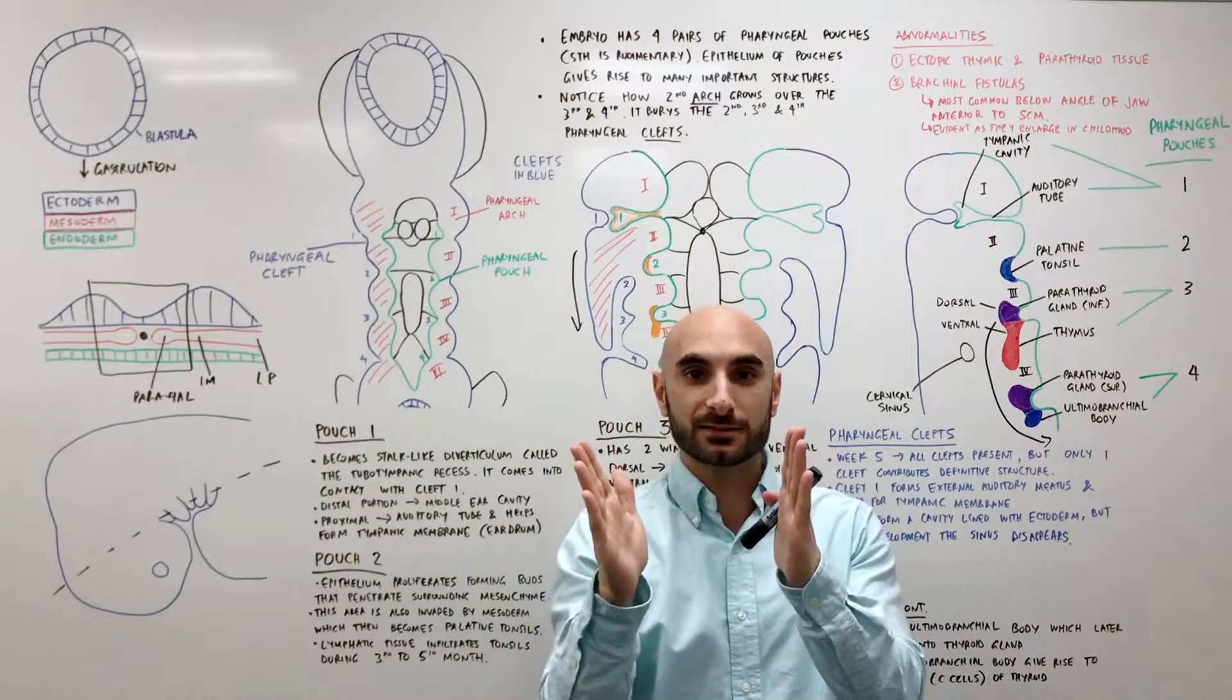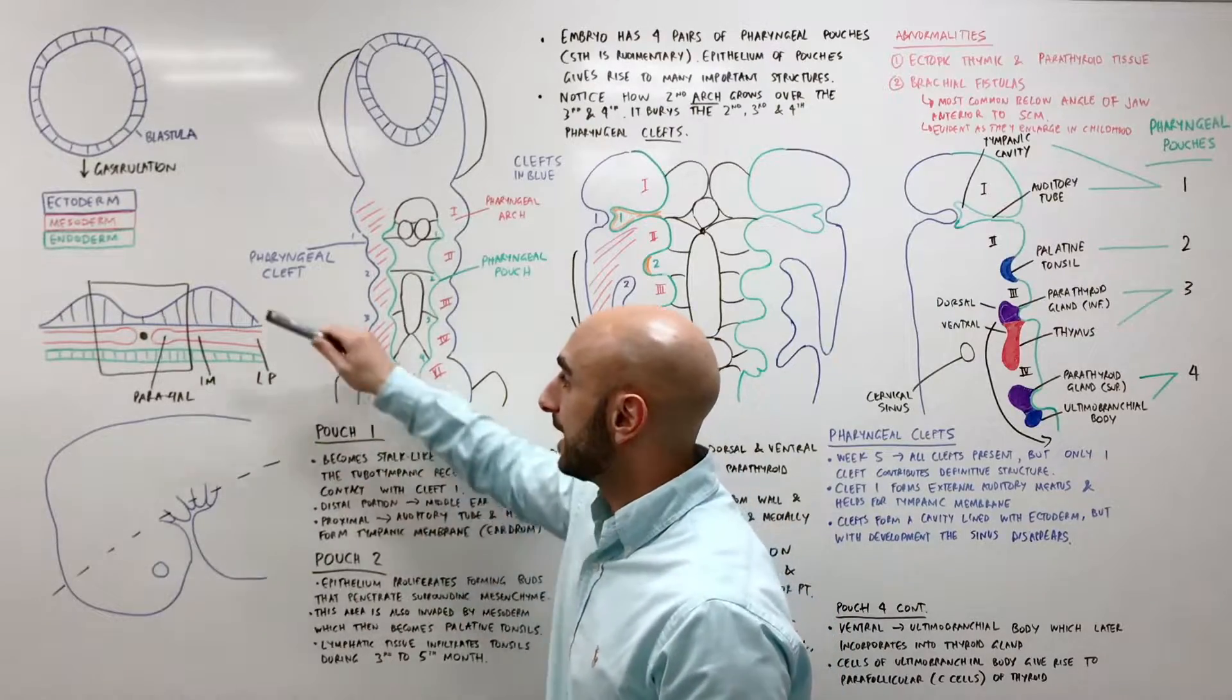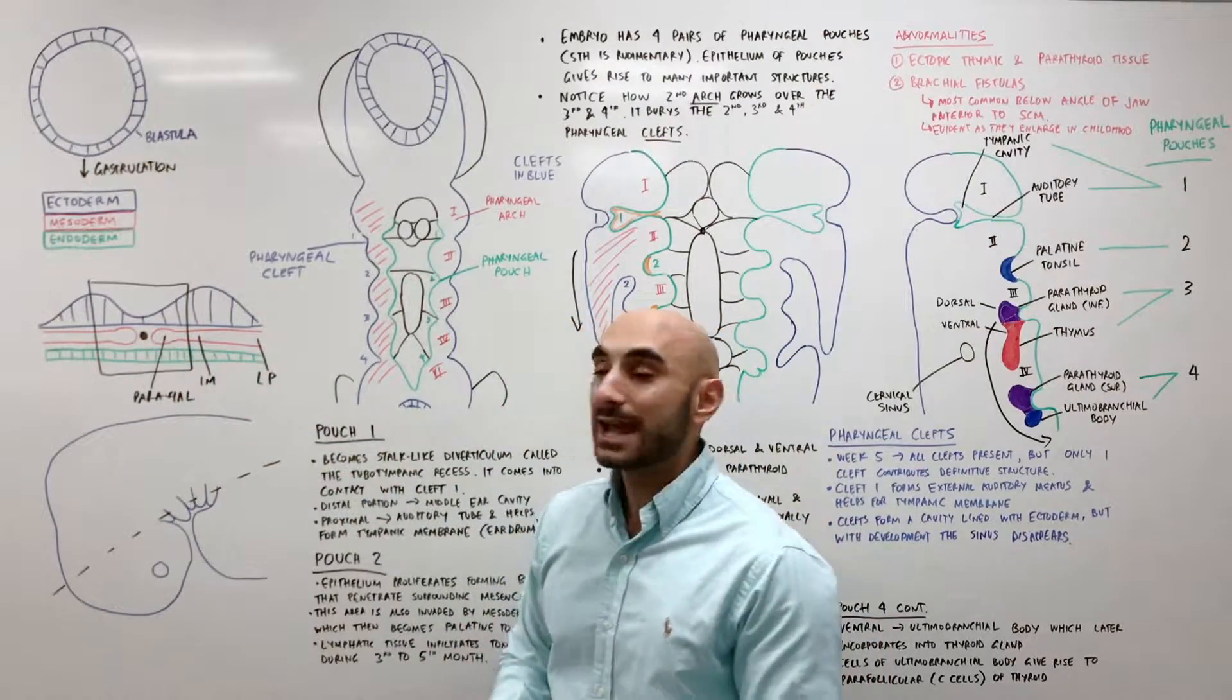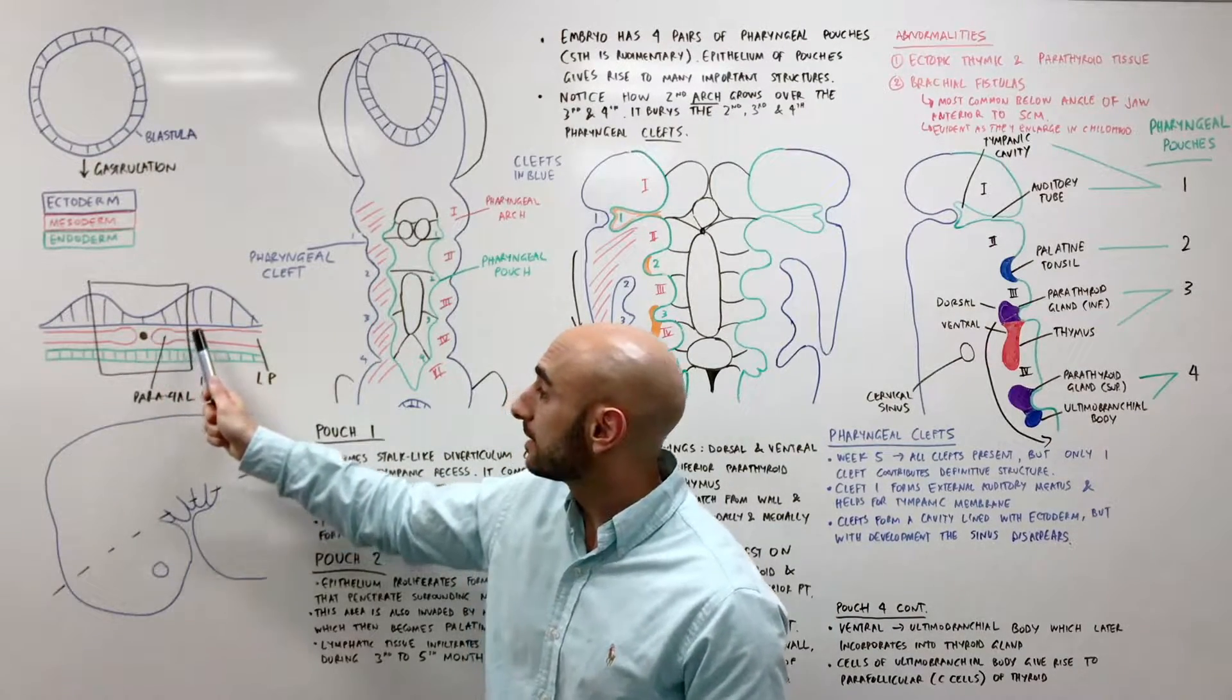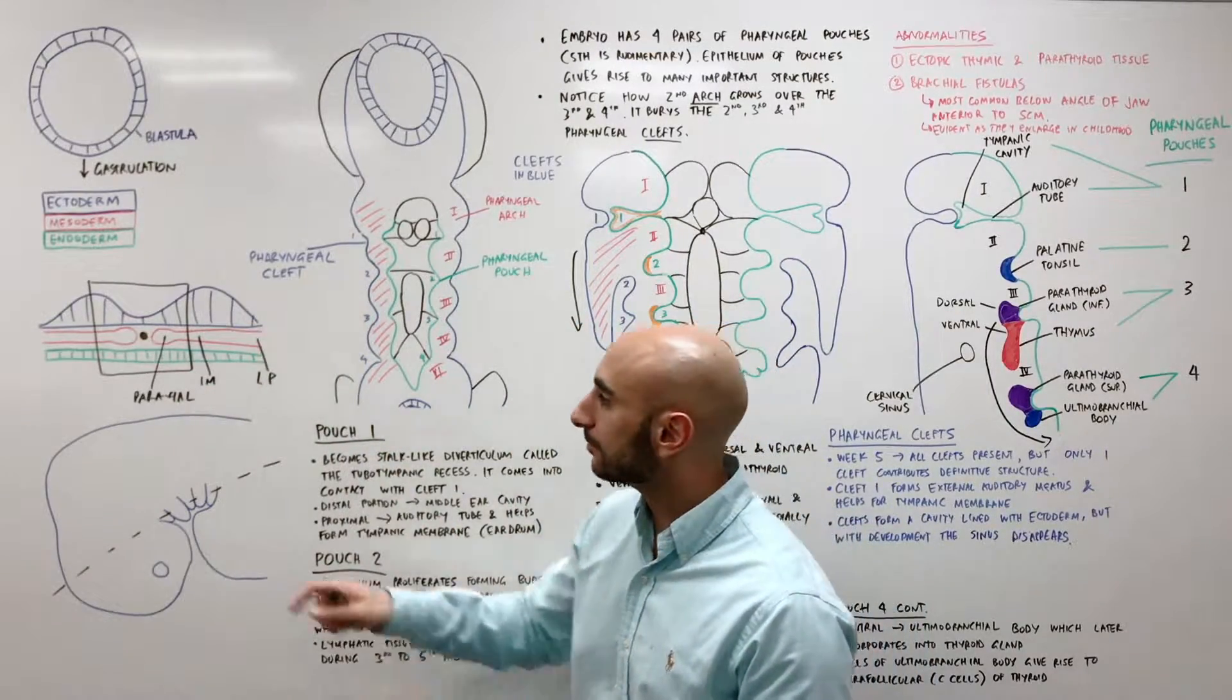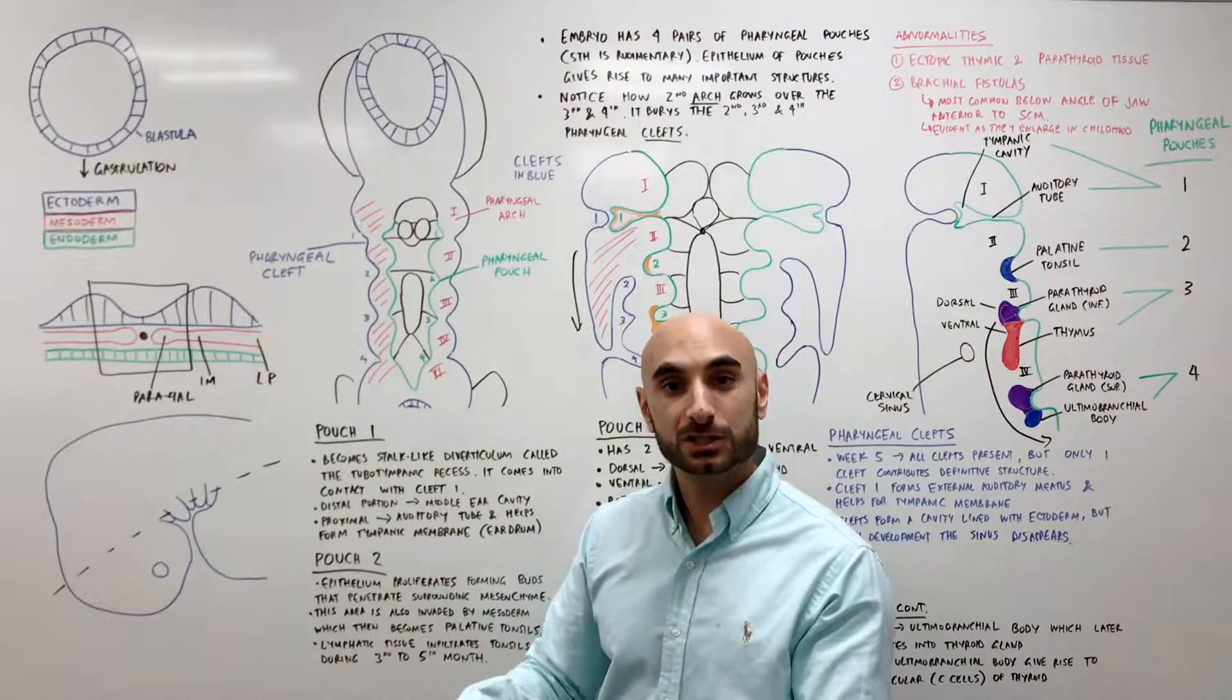So essentially this is a cross section of when you were flat on the uterine cavity. The ectoderm, this is important to know, becomes skin and the nervous system. In red we have the mesoderm where you have paraxial mesoderm, intermediate mesoderm and lateral plate mesoderm. These become most of your internal organs. In green we have endoderm which becomes the gastrointestinal tract essentially.